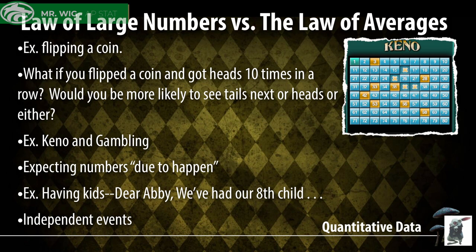That false idea — that something is 'due to happen' — is the false sense of averages. The law of large numbers just says that the larger your sample gets, the more likely your statistics get closer and closer to the true parameters. The law of averages is not the same thing as the law of large numbers at all. If events are independent, it doesn't matter how often something has happened. Another example: if a doctor says you've had seven girls in a row so you're more likely to have a boy — no. If they're independent events, previous outcomes have no impact and will not change the probability of any events that follow.